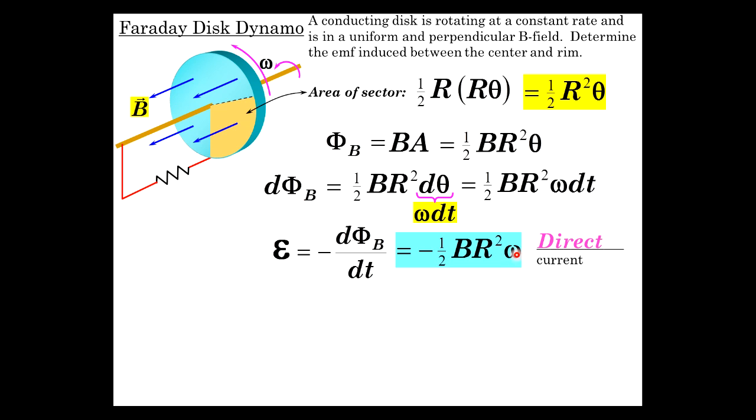You can see that in the expression where omega is constant, as is R and B. So it's a direct current. Now what's the direction of that current?